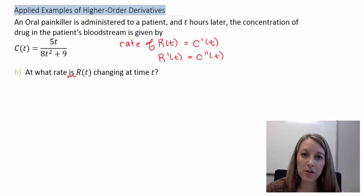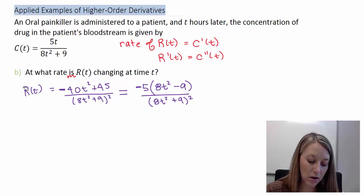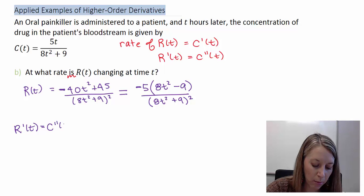Since we computed the first derivative in Part A, let's go ahead and pull that back up. So we have that here in both the format where my numerator is expanded out and in the format where my numerator is factored. We need to know which one of these is going to be easier to take the derivative of when we're trying to compute the next derivative, R'(t) or the same thing as C''(t).